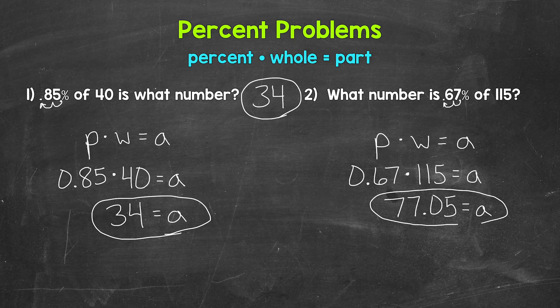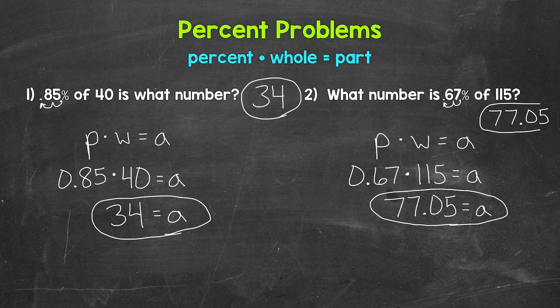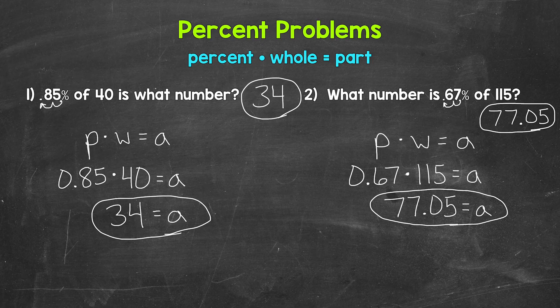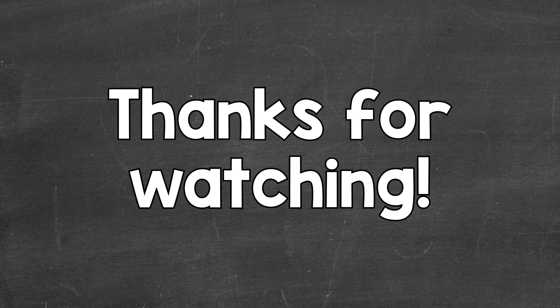That's our part. So for number two, 77 and five hundredths is 67% of 115. So there you have it. There's how to solve percent problems using the percent equation. And specifically, we looked at finding the part. I hope that helped. Thanks so much for watching.